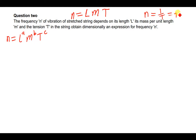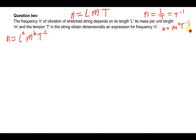Introducing fundamental dimensions, we can write n as M⁰ L⁰ T⁻¹. So the left-hand side is M to the power zero, L to the power zero, and T to the power negative one.